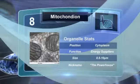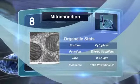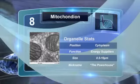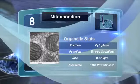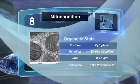Mitochondria, also called the powerhouse of the cell, generate most of the cell's supply of energy, or ATP, through a series of chemical reactions.